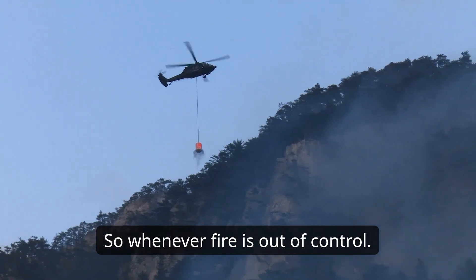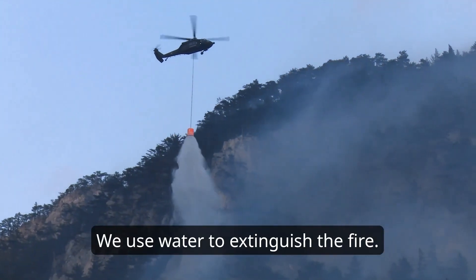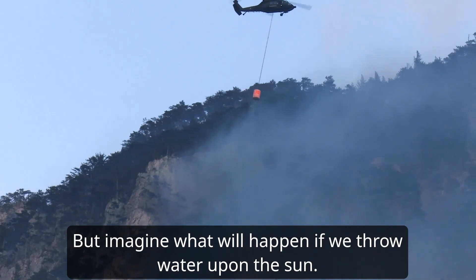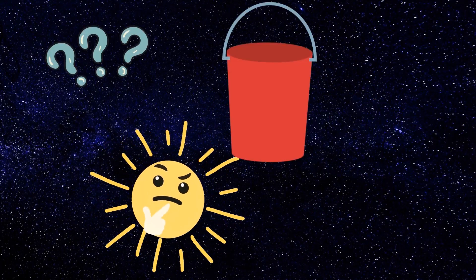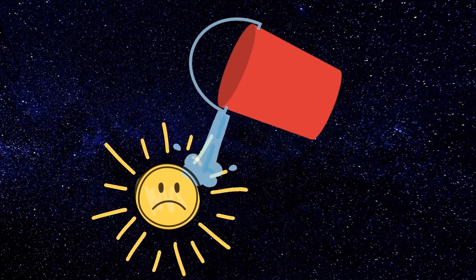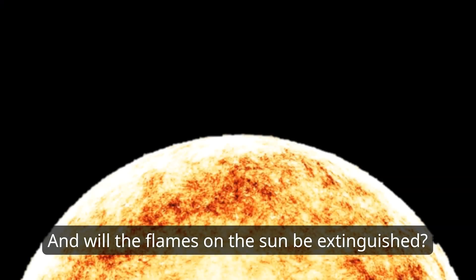So whenever fire is out of control, we use water to extinguish the fire. But imagine what will happen if we throw water upon the sun. Will it really cool down the sun? And will the flames on the sun be extinguished?